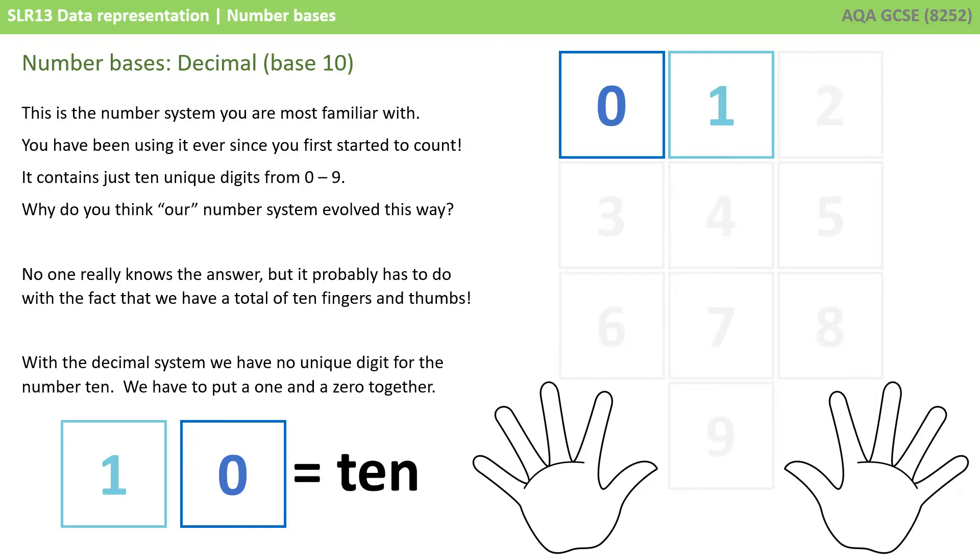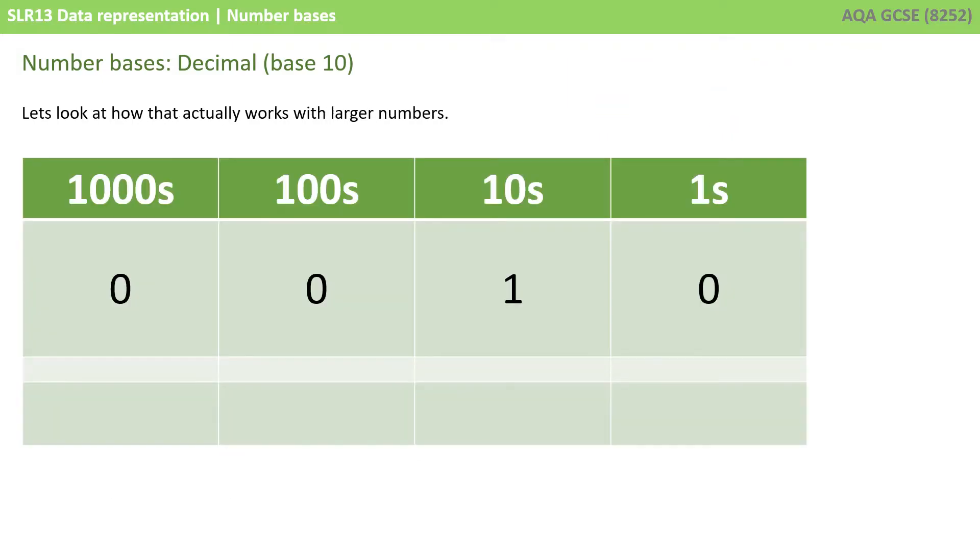With the decimal system, we don't have a unique single digit for the number 10 or any higher numbers. We have to put separate digits together. So, of course, we make up a 10 with a 1 followed by a 0.